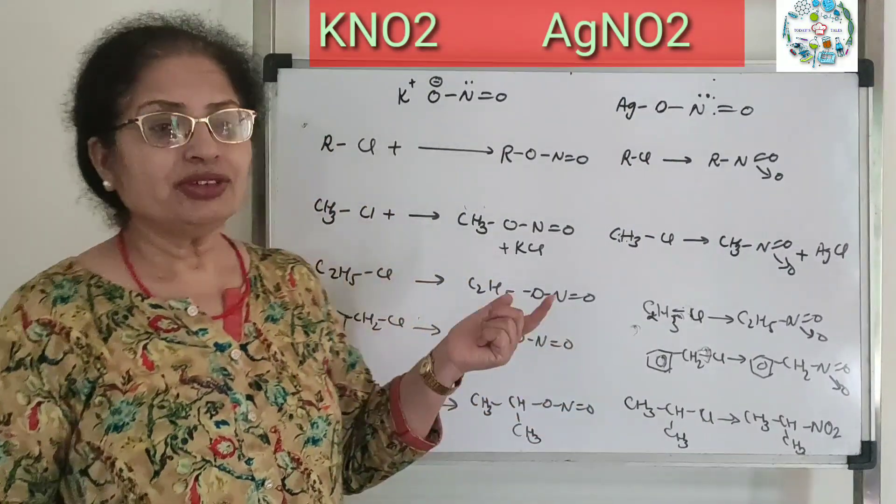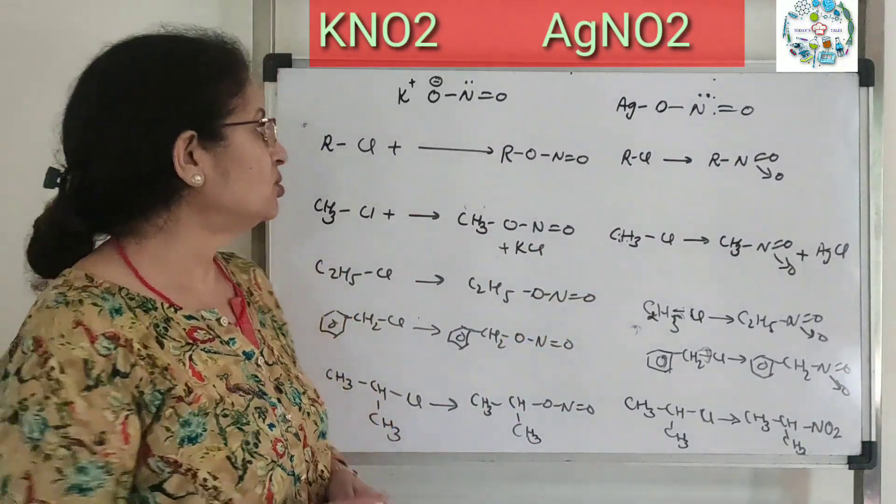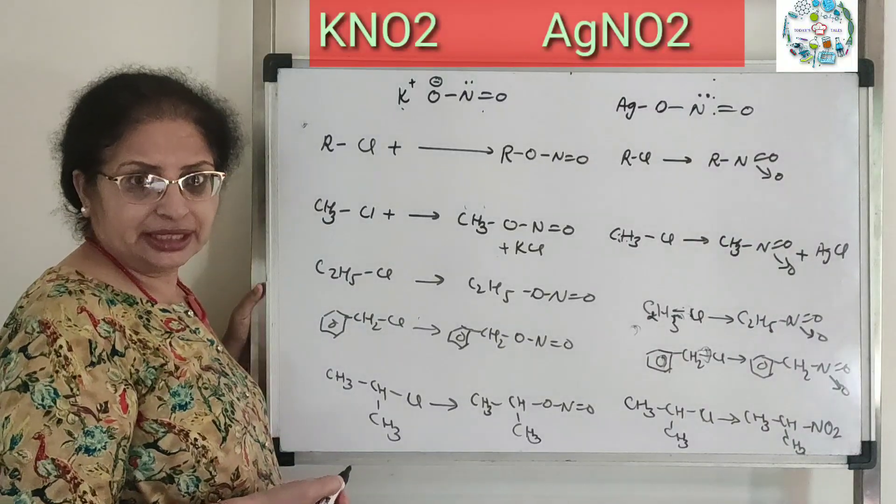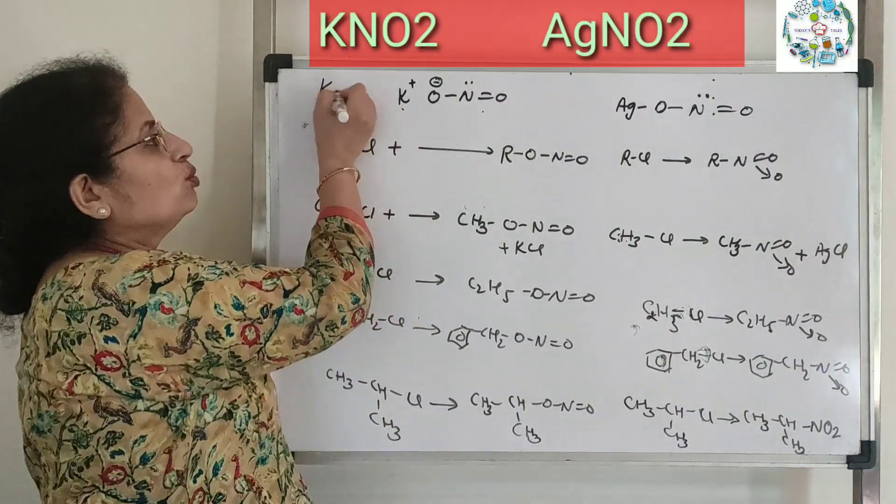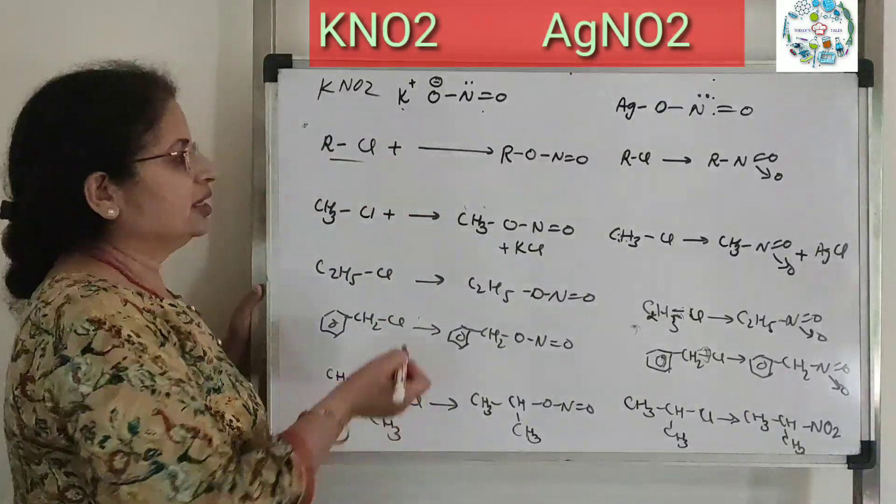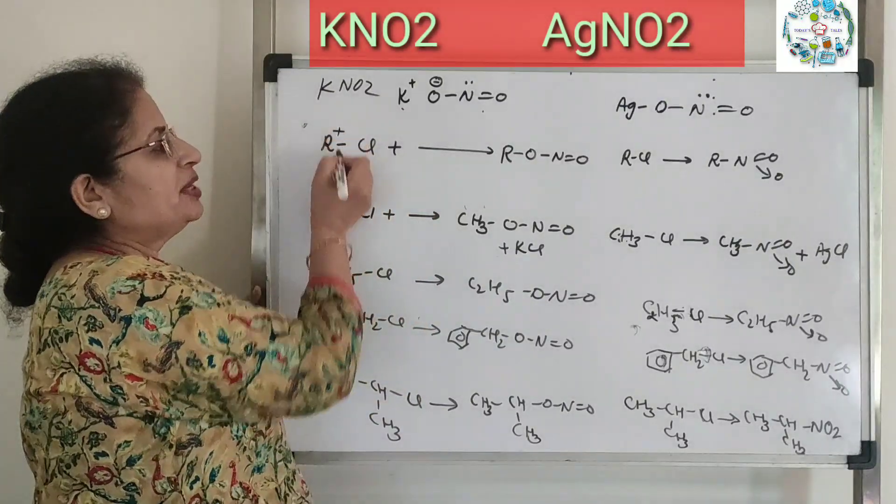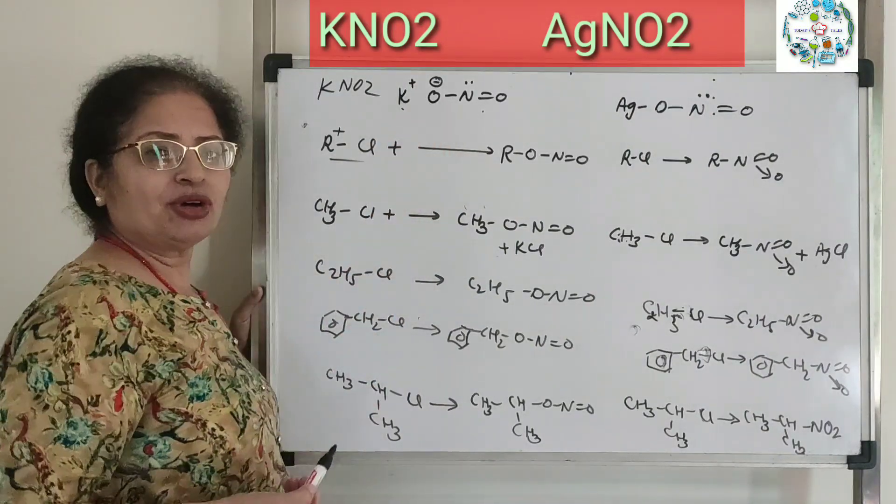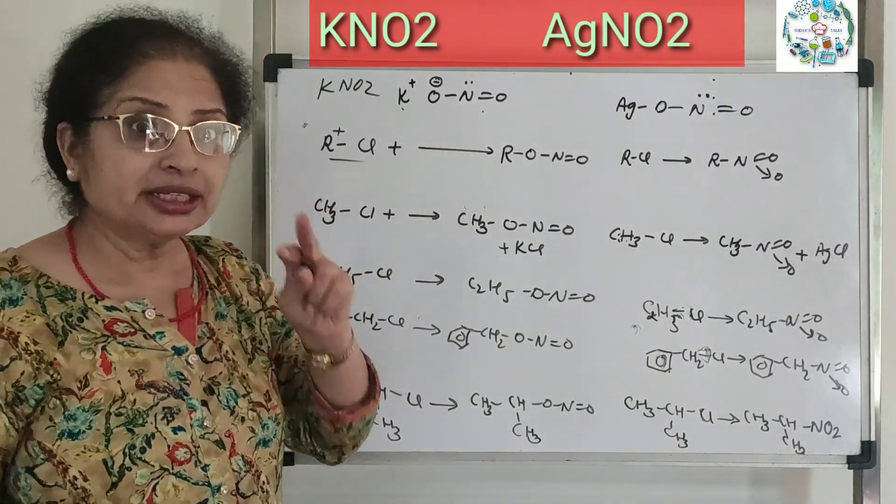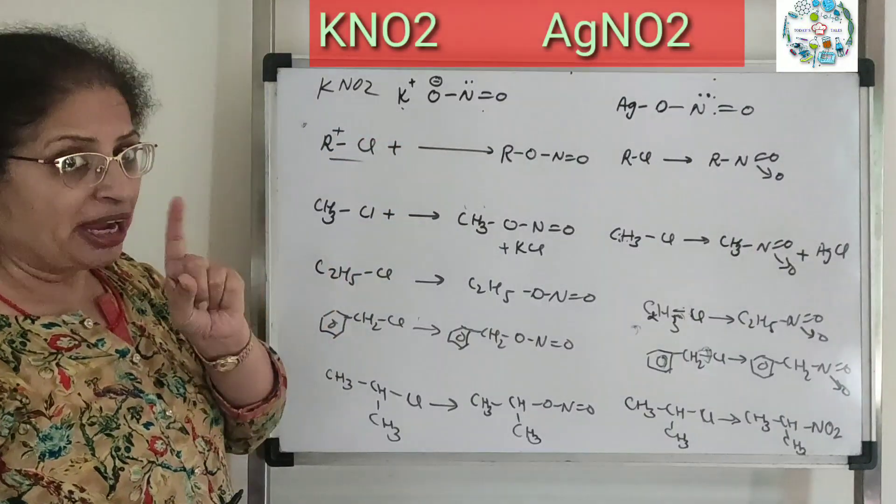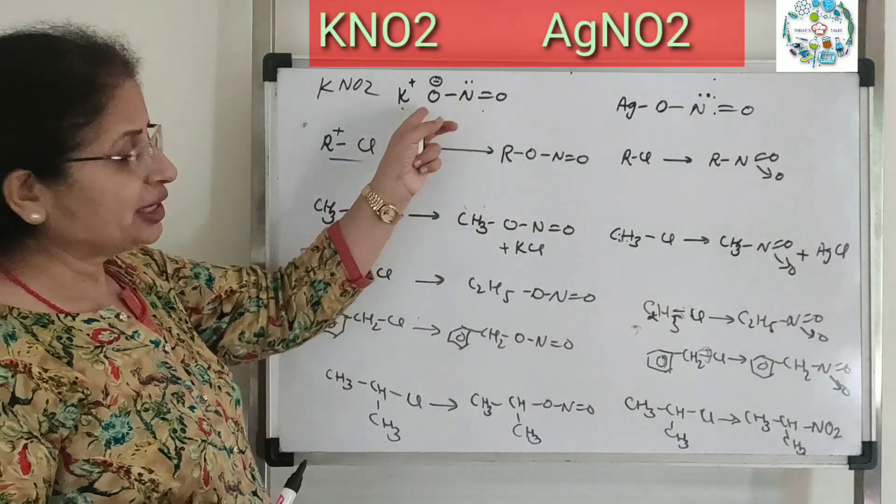Similarly, we see the same difference here also with potassium nitrite, KNO2. When we react this with haloalkanes, R plus has two options. The bond between potassium and oxygen is ionic in nature. Potassium is positive and oxygen is negative with full minus one charge. Two electrons are located on oxygen.